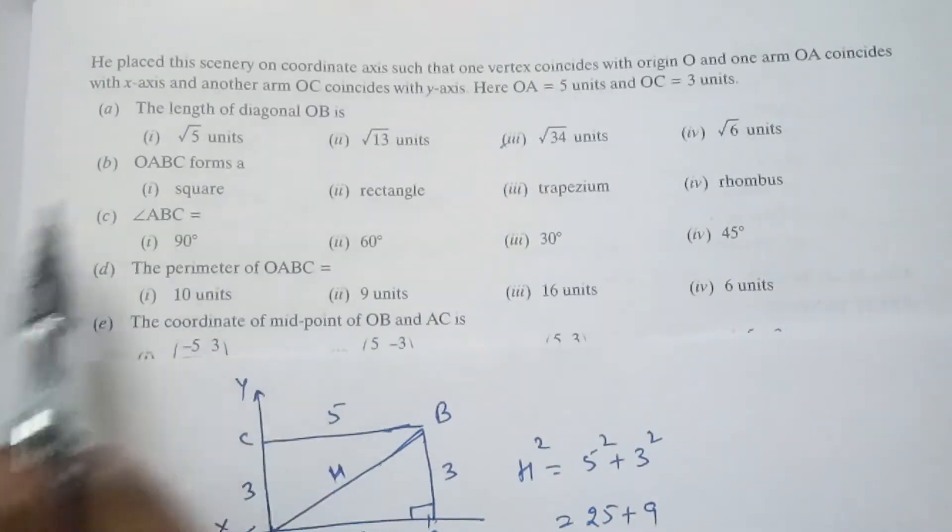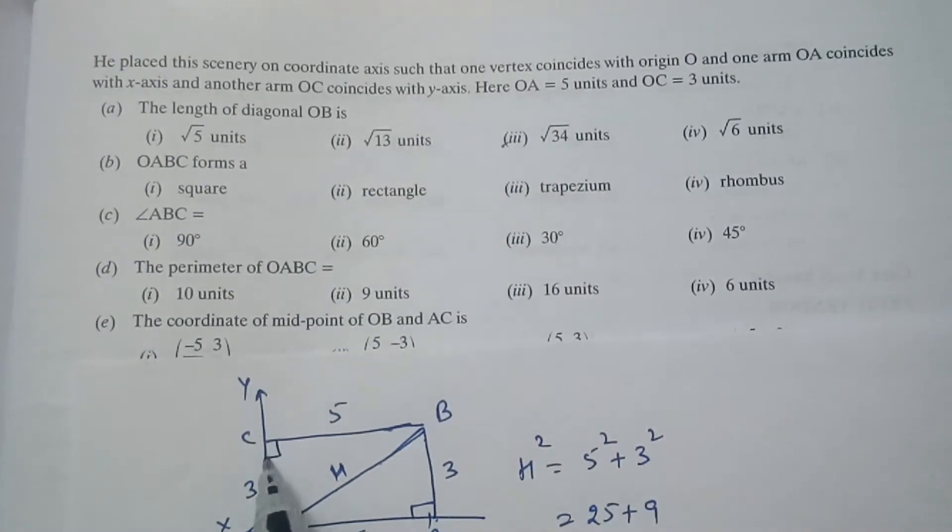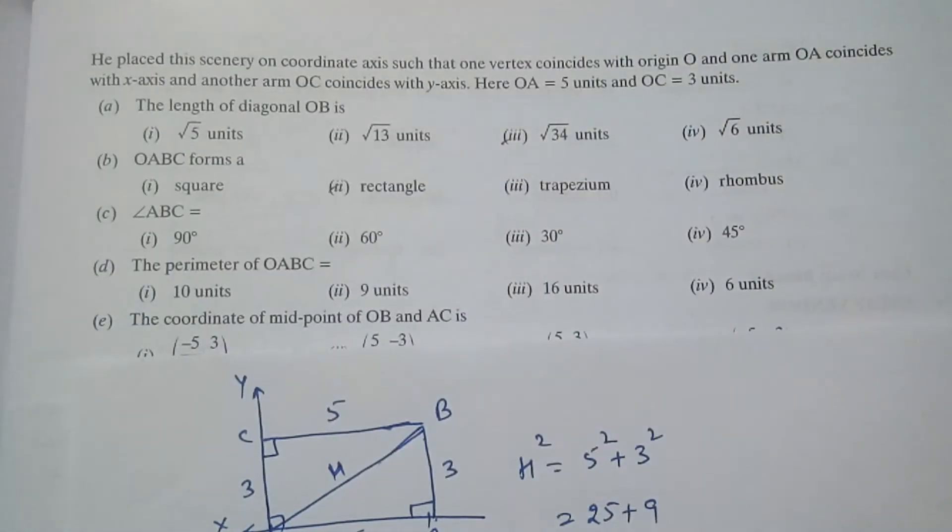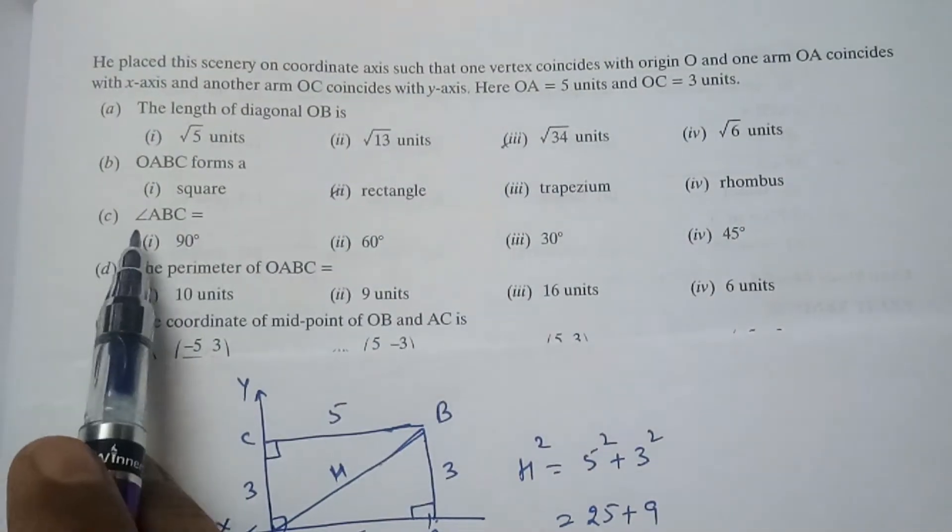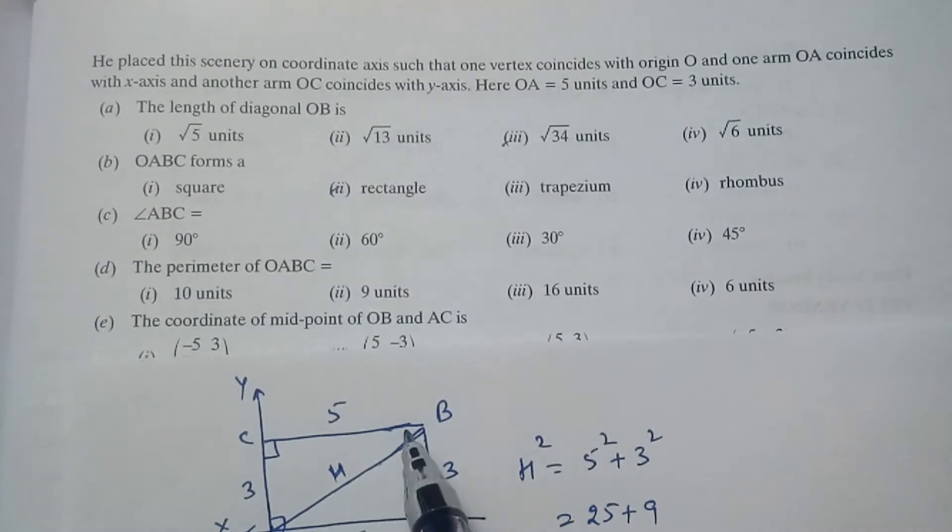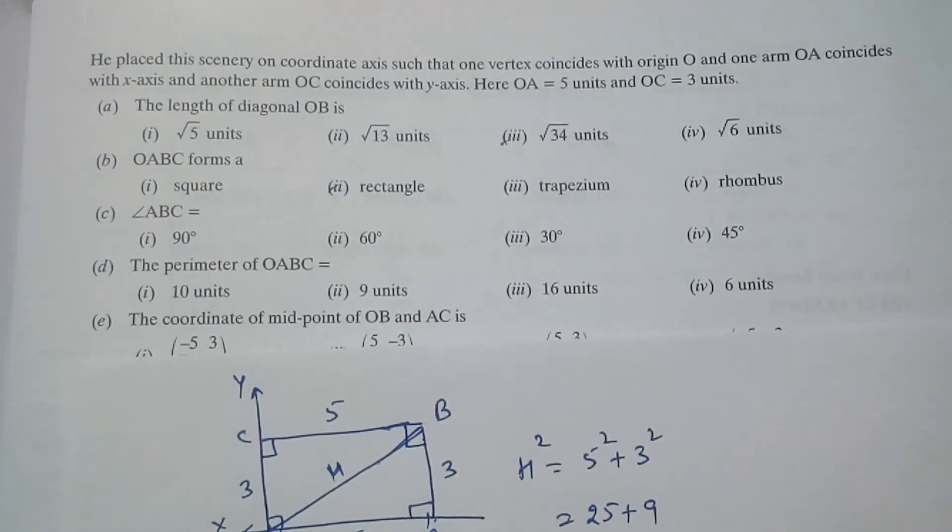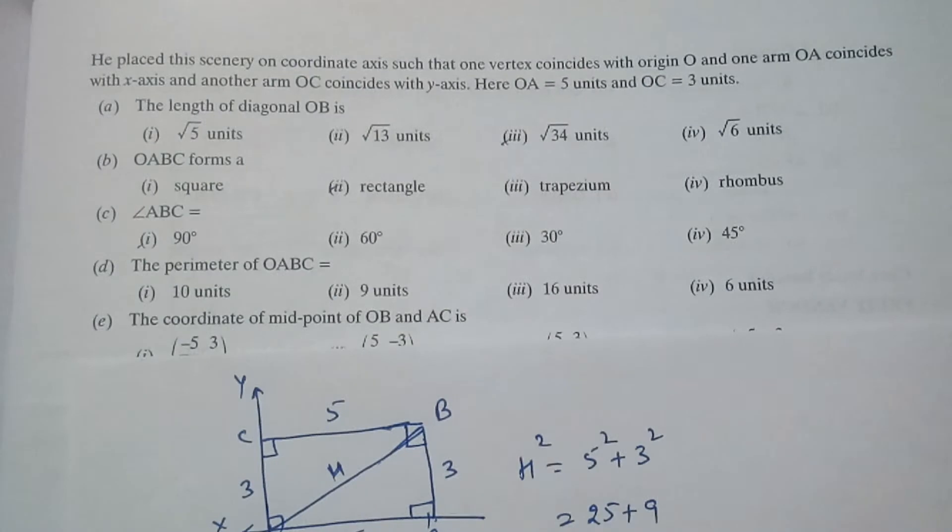OABC will form as all the angles are 90 degrees. So this will be a rectangle. So if it is a rectangle then angle ABC this angle will also be a right angle. So angle ABC is 90 degrees.